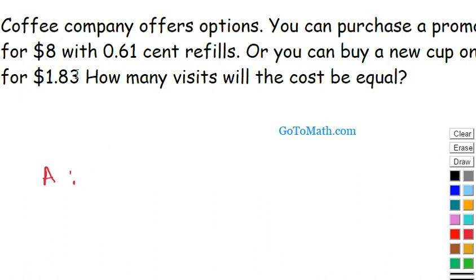So option A is, I've got a promotional cup. You can buy the cup for eight dollars. So this is a cost equation here. C for cost, for option A. Sixty-one cents for refills. So we're going to say 0.61 and let X be the number of refills. And the initial cost is eight dollars to buy the cup. Each refill is 61 cents. And this would be the number of refills.